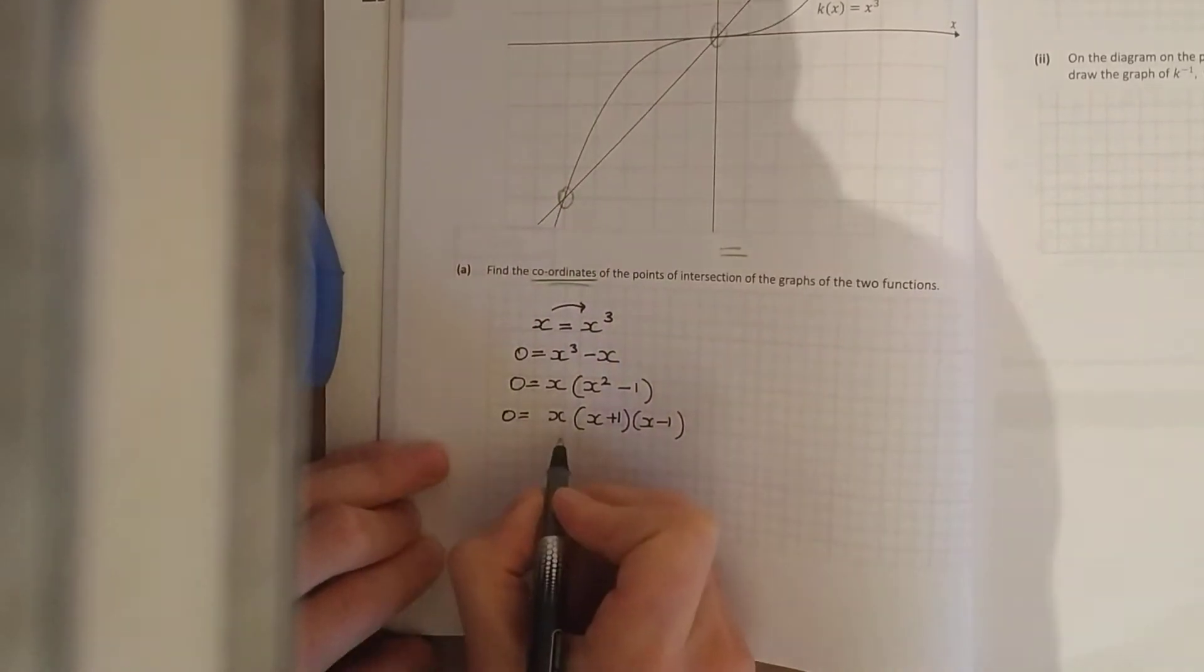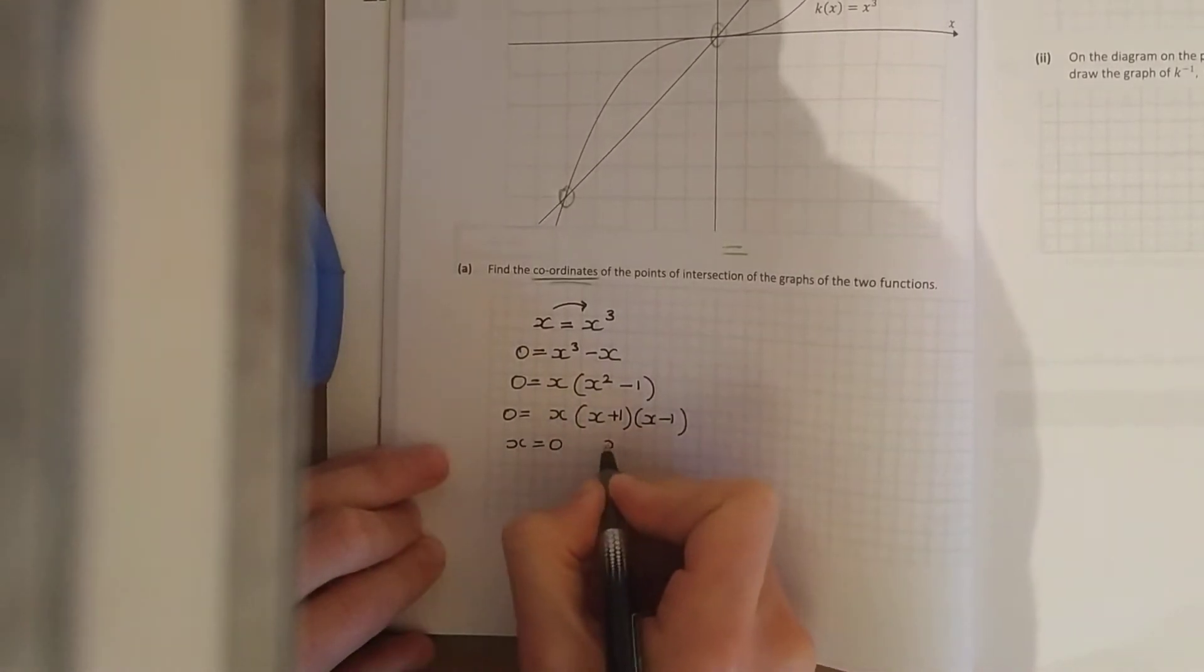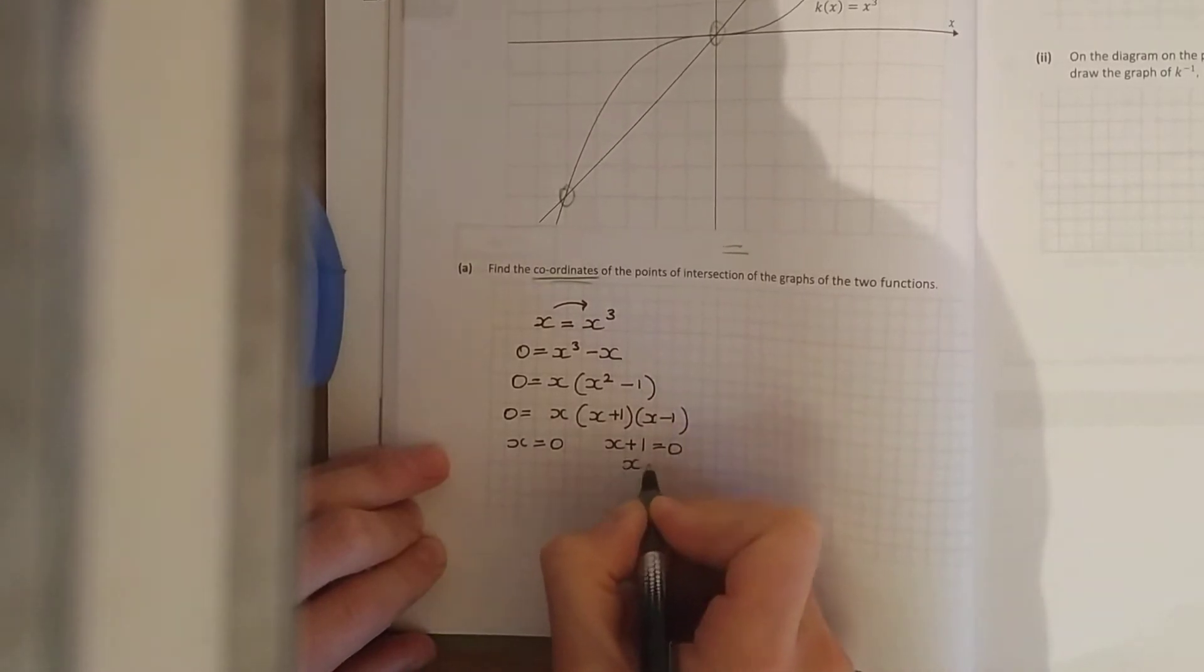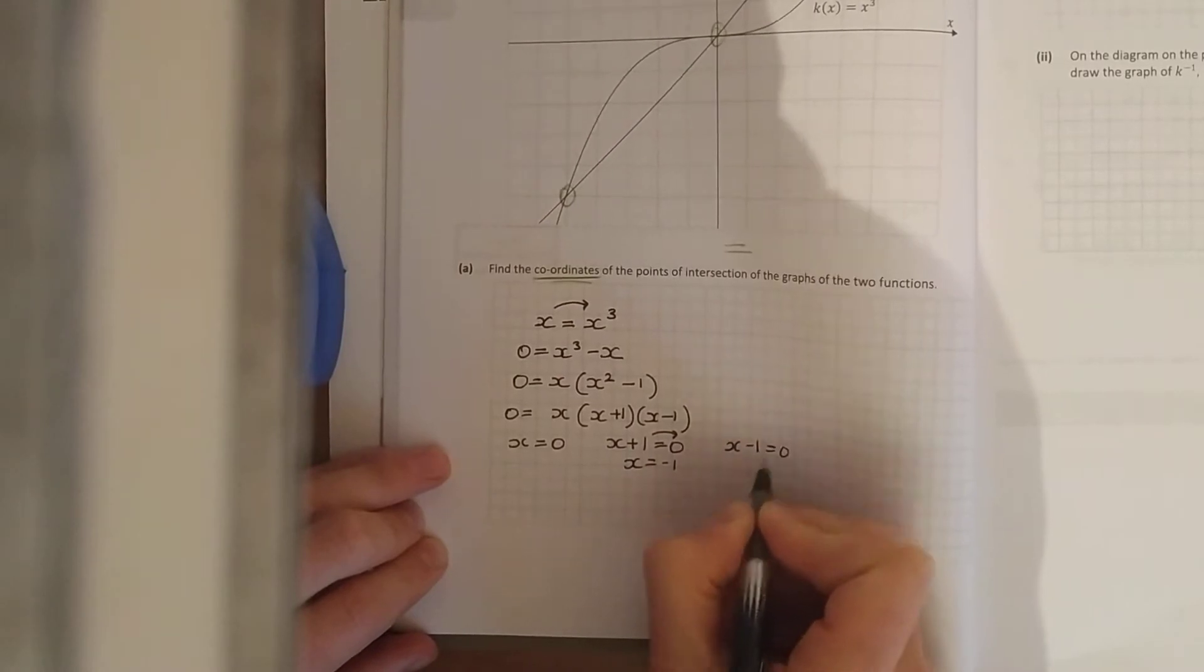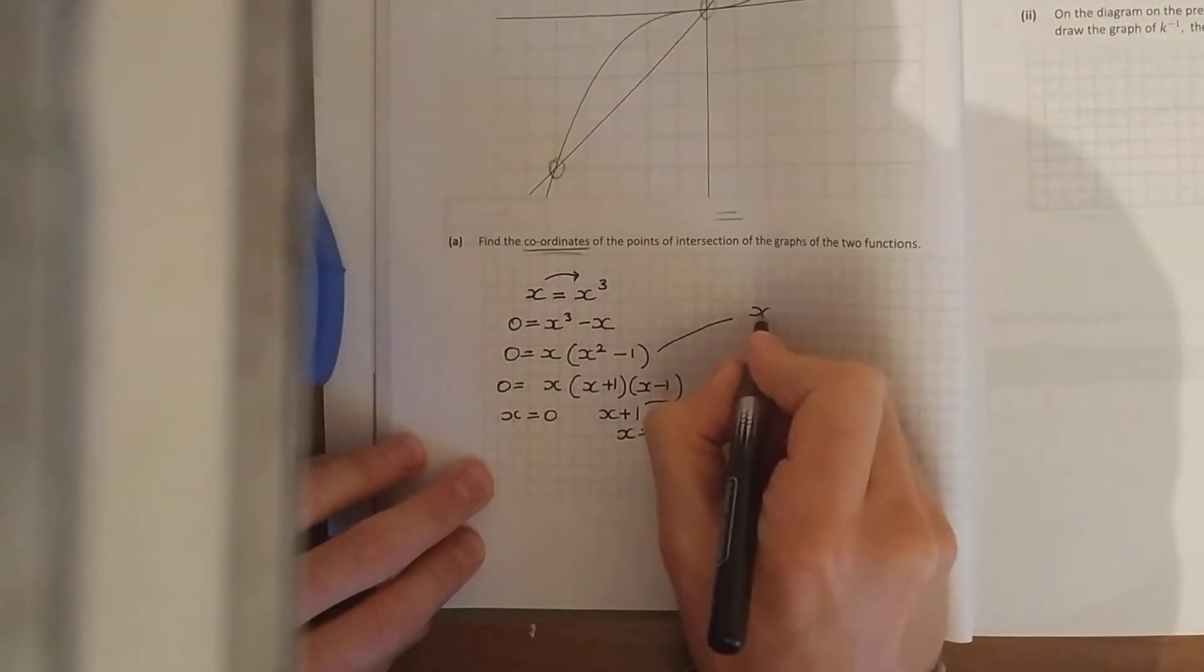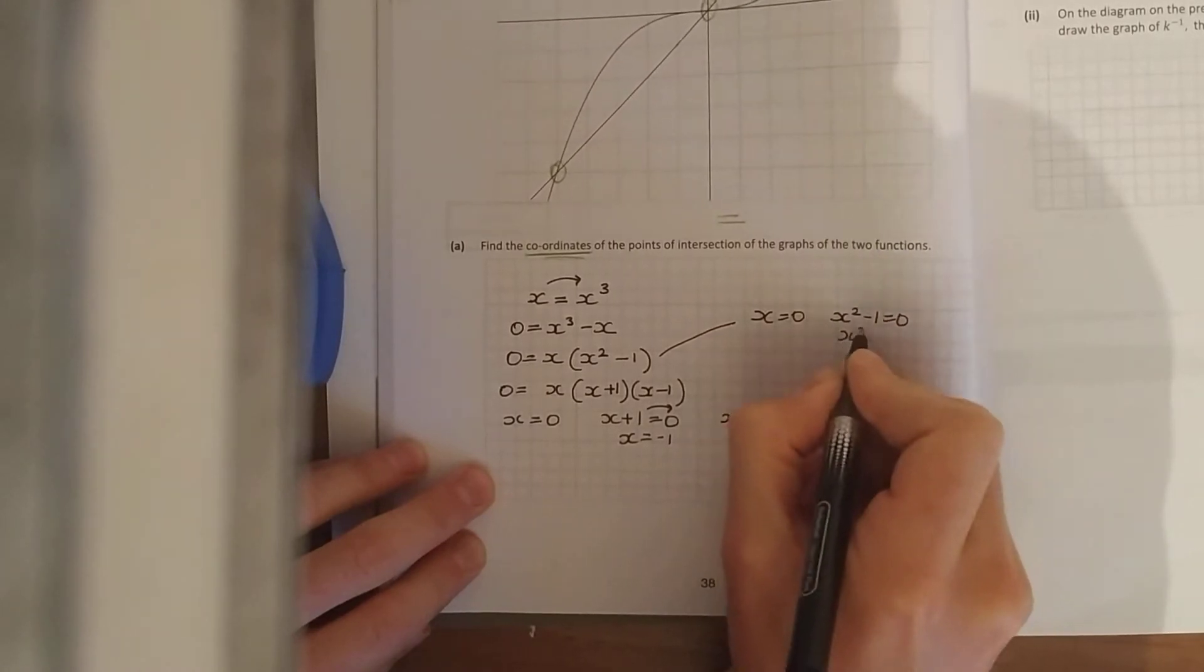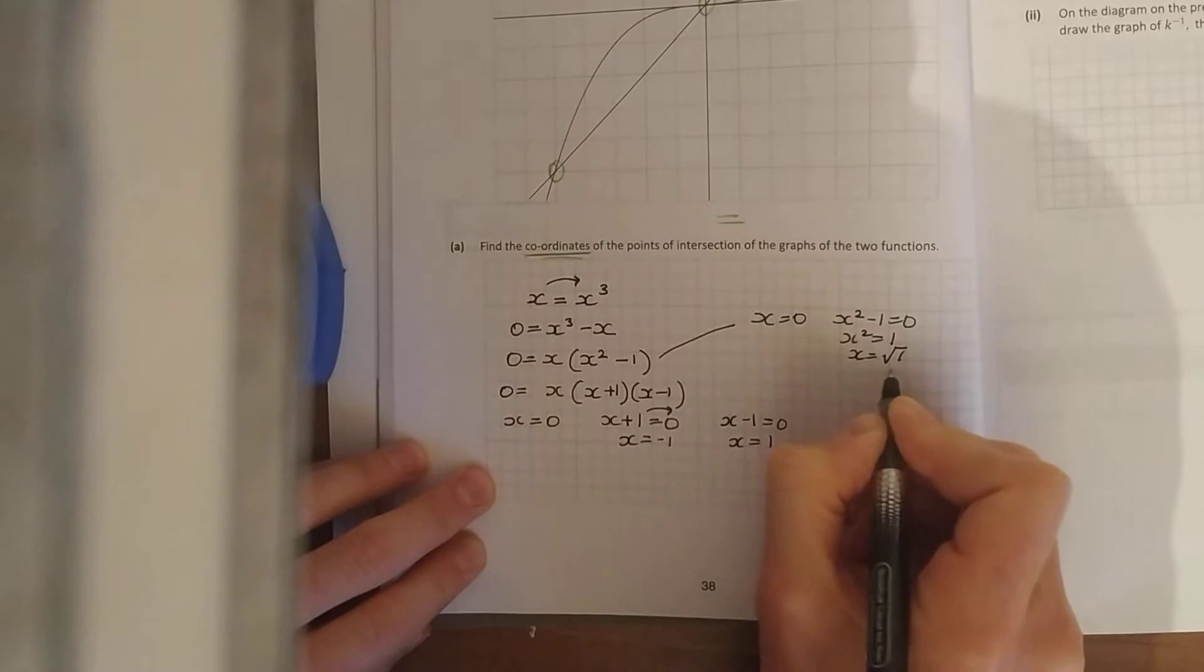And they might rewrite that as (x+1)(x-1) and then let each term equal to 0. x = 0, let each factor equal to 0 should I say. x = -1 and x - 1 = 0, x = 1. As I say, someone else might have just simply said here x = 0, x² - 1 = 0, x² = 1, and x is the square root of 1, and just remember that's plus and minus 1.